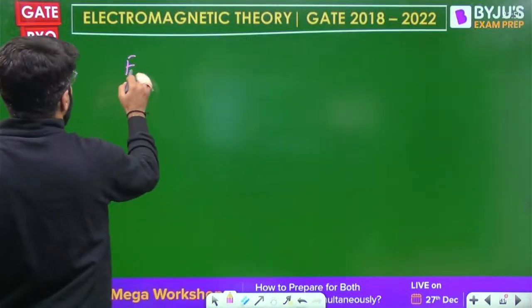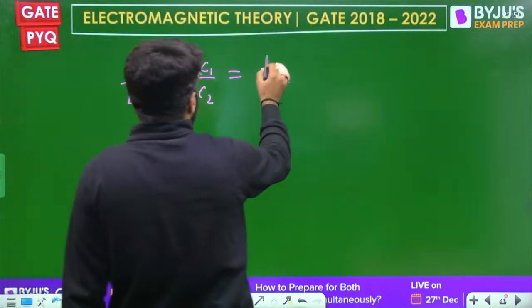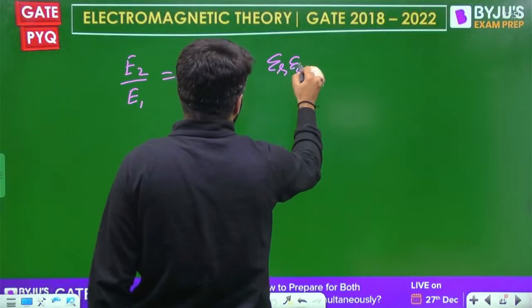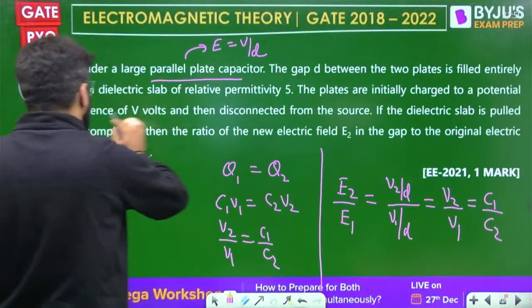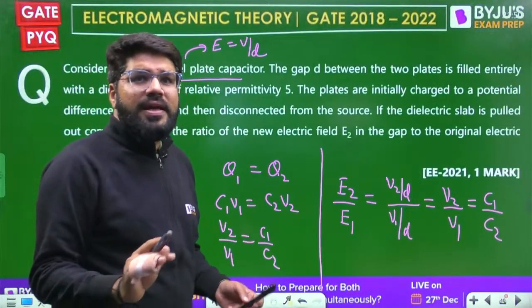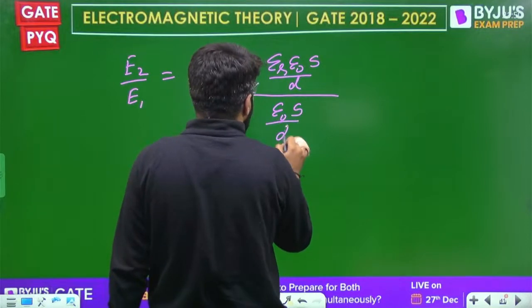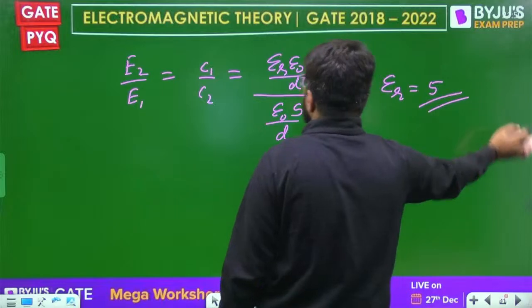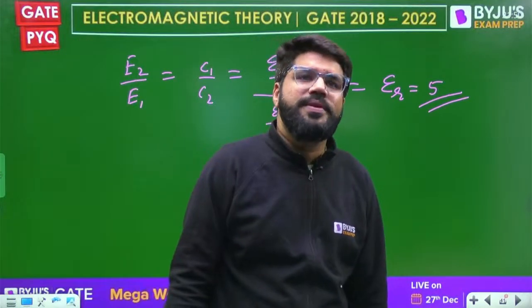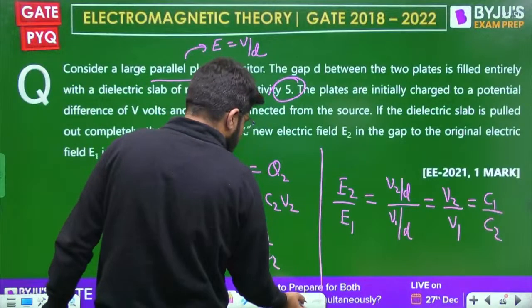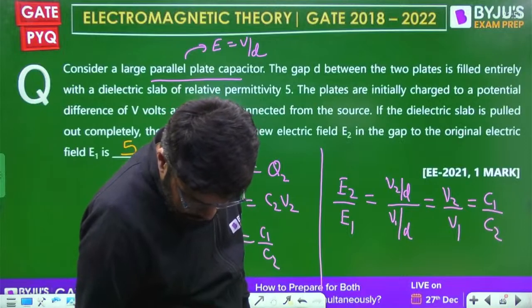The answer is E₂/E₁ = C₁/C₂ = εᵣ = 5. Since the plate separation and area remain the same, the ratio is simply the relative permittivity 5. This numerical answer type question has answer equal to 5.